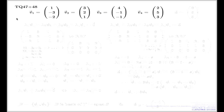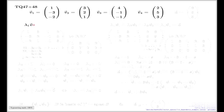I will show that these four vectors are linearly dependent. To do that, I take a linear combination of my vectors and assume that this linear combination equals the zero vector.